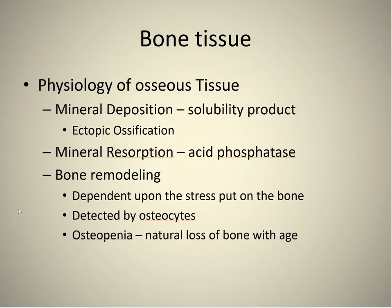Acid phosphatase helps dissolve bone to resorb hydroxyapatite, and that's what osteoclasts use. Bone remodeling depends upon the stress put on a bone. Astronauts who go into space and don't exercise come down losing a lot more bone than they went up with, because with no gravity, there's no stress on bones — same for muscle. This is detected by osteocytes. As you grow older, you have a natural loss of bone with age called osteopenia, which is not osteoporosis.